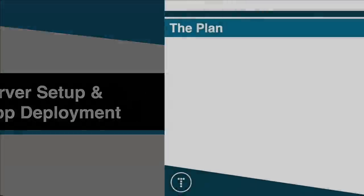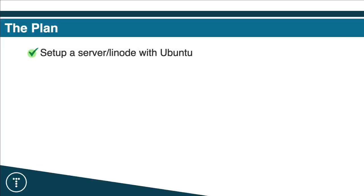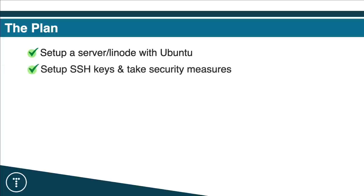I want to quickly go over the plan for this video. I do have a gist in the description that has everything — it's basically a text version of the video with all the commands we're going to run. First thing we'll do is set up a server using Linode with the Ubuntu distro. Then we're going to set up SSH keys — generate keys on our client machine, add the public key to the server, and log in using SSH keys instead of a password.